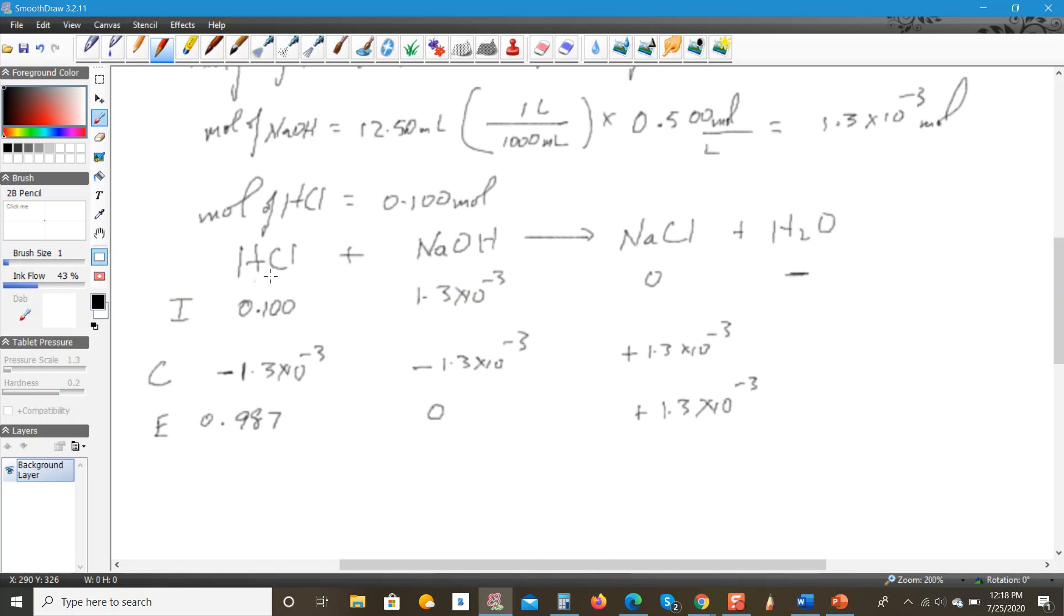Just to recap, because I made that error: this is the initial amount of HCl, this is the initial amount of sodium hydroxide. The sodium hydroxide is a limiting reactant, so all of it will be used up. The change is -1.3 × 10^-3. The change for HCl is the same because of the 1 to 1 ratio between the two. And the change for sodium chloride will be +1.3 × 10^-3. Then we get to this here, 0.987. This will be zero because it's all used up. And here we're going to have 1.3 × 10^-3.